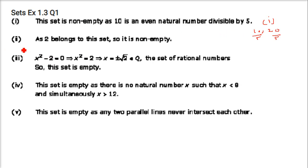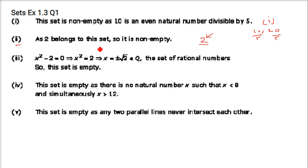The second part is the set of all even prime numbers. We have the number 2, which is the only even prime number that exists in mathematics. So this set is also not empty — it has 2 in it.